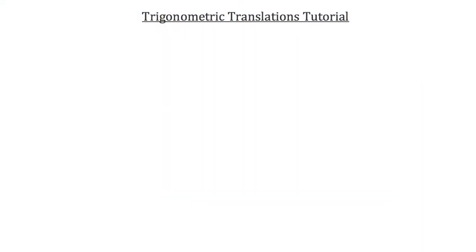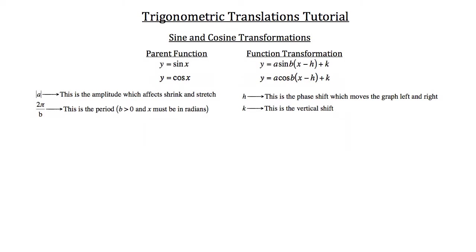This is the trigonometric translations tutorial. We're going to be dealing with translations involving sine and cosine functions. The parent function of a sine function is y = sin(x). When we deal with transformations of sine functions, it looks like y = a·sin(b(x - h)) + k, where the absolute value of a is the amplitude, which affects the shrink and stretch of a graph, and 2π/b is the period, where b must always be greater than zero.